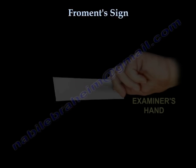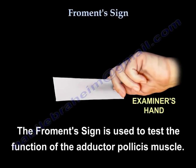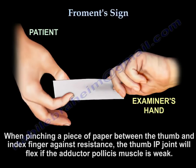Froment's sign is used to test the function of the adductor pollicis muscle. When pinching a piece of paper between the thumb and the index finger against resistance, the thumb IP joint will flex if the adductor pollicis muscle is weak.